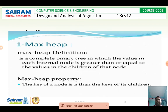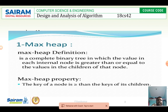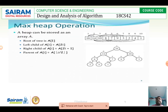Max heap definition: a max heap is a complete binary tree in which the value in each internal node is greater than or equal to the values of the children of that node. Max heap property: the key of a node is always greater than or equal to its children.